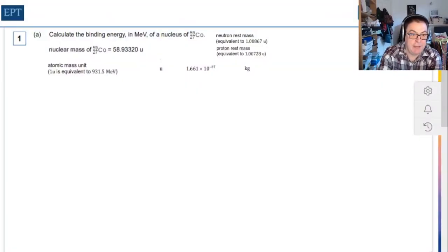Calculate the binding energy in MeV of a nucleus, Cobalt-59, and we're given the mass of that nucleus in atomic mass units. In order to find the binding energy, we need to find the mass loss as the nucleus is being formed, which means we have to find whatever the mass was of the nucleus's initial components.